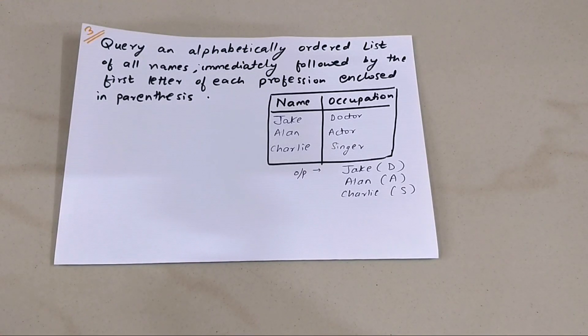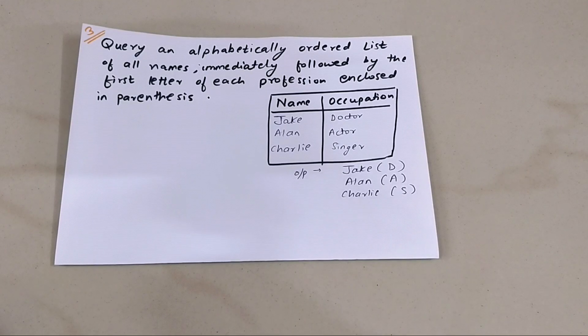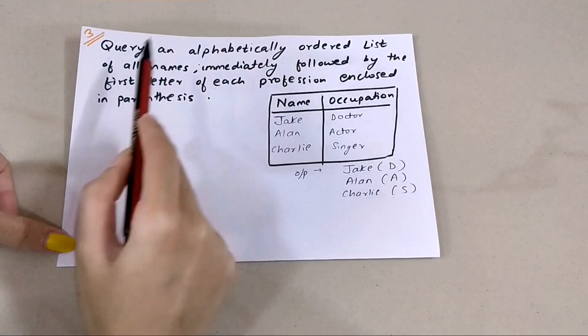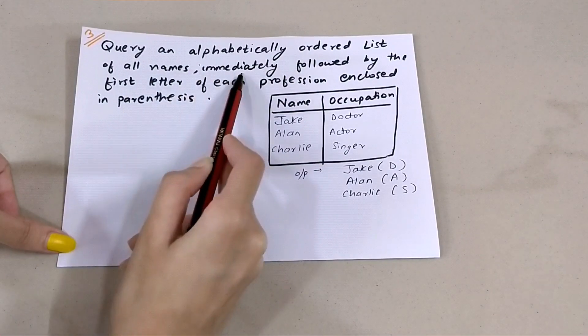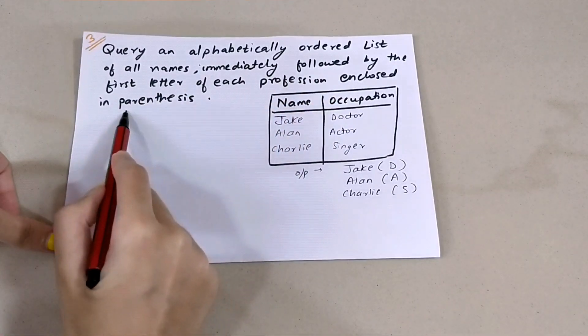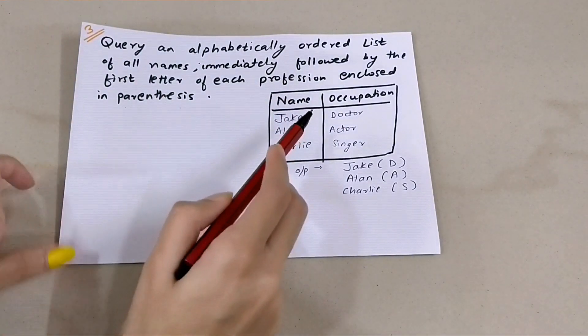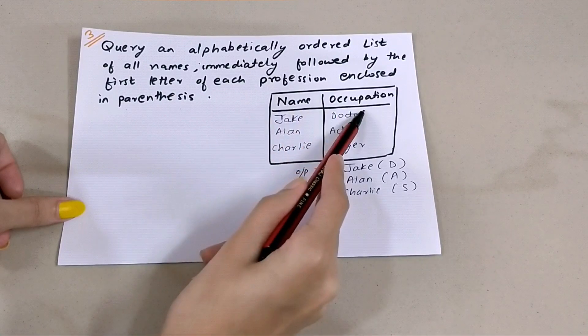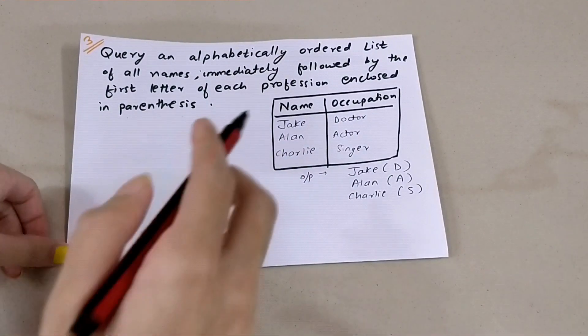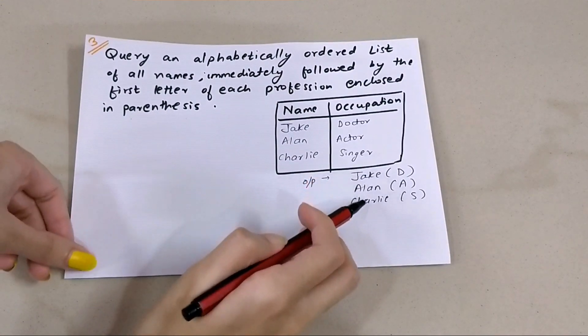Let's begin with this query: Query an alphabetically ordered list of all names immediately followed by the first letter of each profession enclosed in parentheses. For example, if this is our table with the name column and occupation column, the output should be the names - Jake, Allen, Charlie - all these are the names.